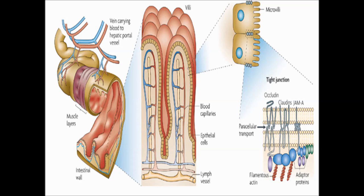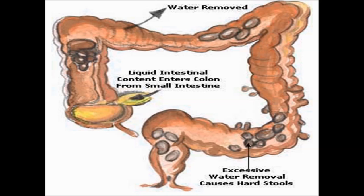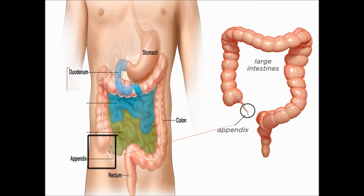Key points: The intestinal glands secrete intestinal juice containing enterokinase, peptidase, lipase, sucrase, nucleotidase and nucleosidase. The enzymes of intestinal juice completely hydrolyze the food material. The digested food is absorbed into the blood through the wall of the intestine. Villi are finger-like projections on the walls of the small intestine that increase the absorption surface. Water and mineral salts are absorbed in the large intestine. Fecal matter containing undigested food material, bile pigments and dead bacteria is formed in the large intestine and pushed into the rectum.